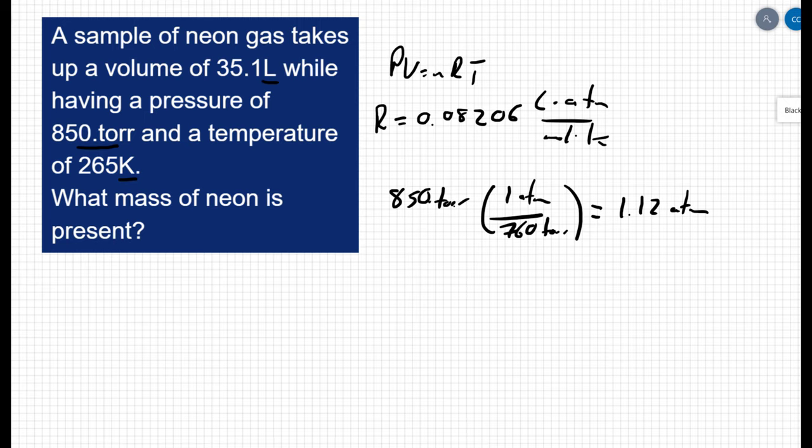So what this question is solving for is the amount. So when I look at the Ideal Gas Law, again PV equals nRT, I want to isolate the amount. So that means I'm going to divide both sides by RT. So I end up with a statement n equals PV over RT.